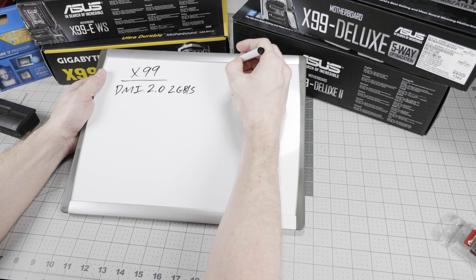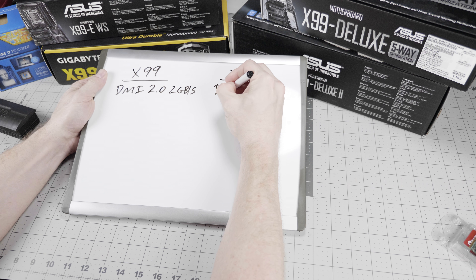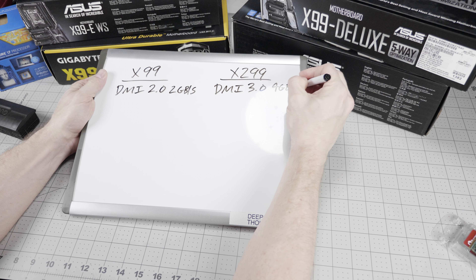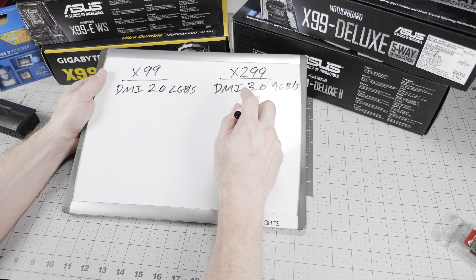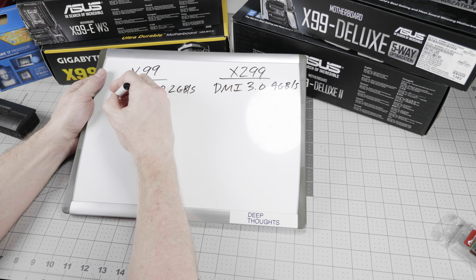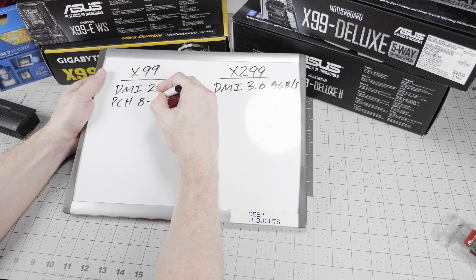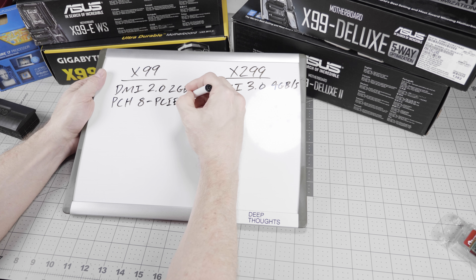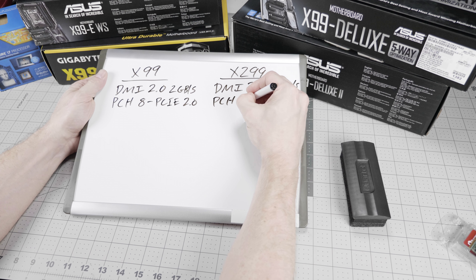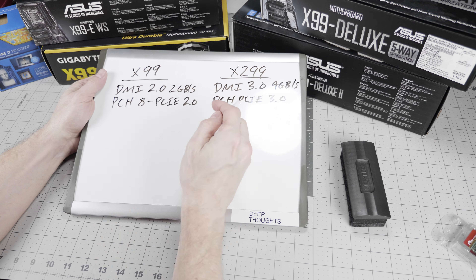On X299 we have DMI 3.0, which runs at four gigabytes per second — a big step forward, twice as fast, much less of a bottleneck for the connection to the PCH. Then on the PCH itself, the eight lanes of PCI Express have been upgraded from 2.0 on X99 to 3.0 on X299, with eight lanes in each case.